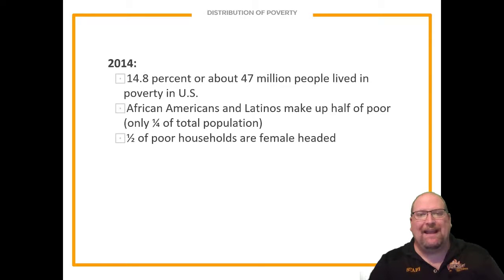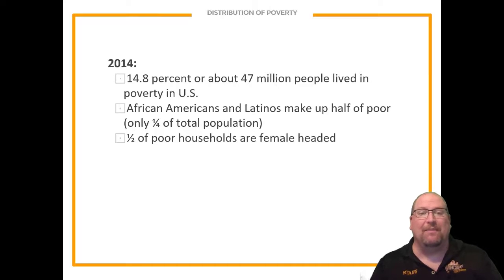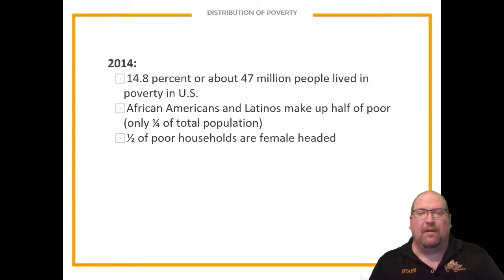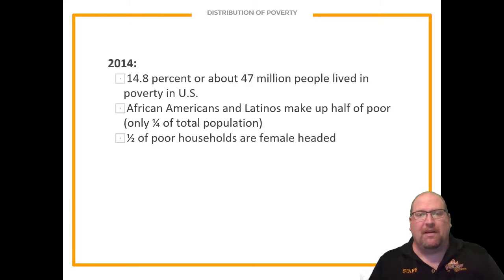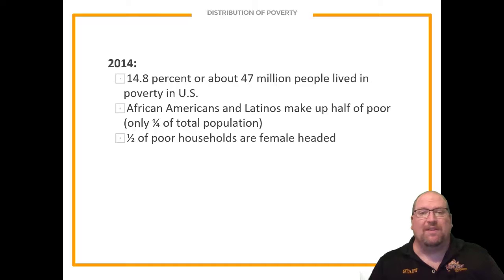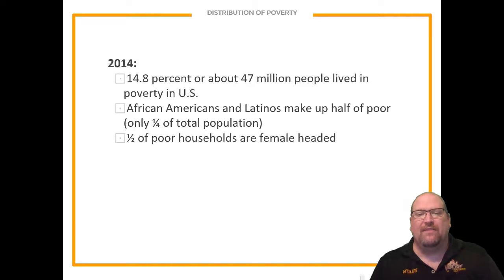We are going to look primarily at the statistics — the facts of what poverty looks like by the numbers. The main numbers we'll use come from 2014 Census Bureau data, which are approximate but fairly close. Some of these numbers also come from the Bureau of Labor. So as we can see, in 2014, 14.8 percent — or about 47 million people — lived in poverty in the United States.